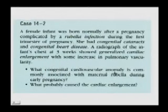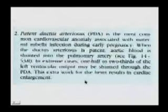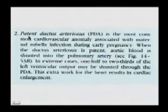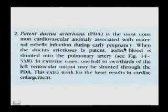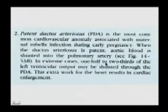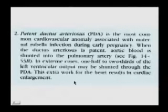What congenital cardiovascular anomaly is commonly associated with maternal rubella during early pregnancy, and what probably caused the cardiac enlargement? Patent ductus arteriosus is the most common cardiovascular anomaly associated with maternal rubella infection during early pregnancy. When the ductus arteriosus is patent, aortic blood is shunted into the pulmonary arteries. In extreme cases, one-half to two-thirds of the left ventricular output may be shunted through the PDA, and this extra work for the heart results in cardiac enlargement.